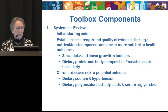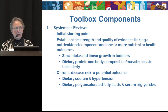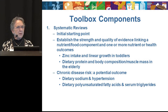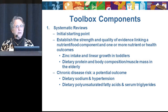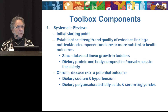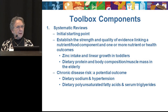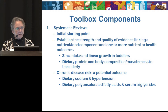Some examples might be to look at the relationship between zinc intake and linear growth in toddlers. Another potential systematic review might be dietary protein and body composition or muscle mass in the elderly. Both of those systematic reviews would be extremely helpful in setting recommendations for zinc intake for toddlers and protein intake for older folks. An area we're beginning to think about is how to consider chronic disease as a potential outcome associated with nutrient intake. It's very difficult at this time to know exactly how to implement this, but we need to start by doing systematic reviews on the links between chronic disease and diet.